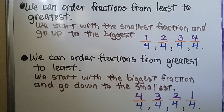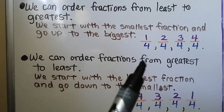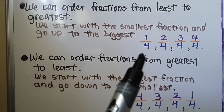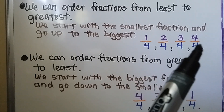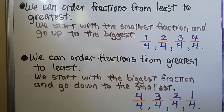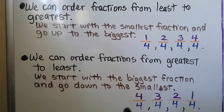We can order fractions from least to greatest — we start with the smallest fraction and go up to the biggest. We can also order fractions from greatest to least — we start with the biggest fraction and go down to the smallest.